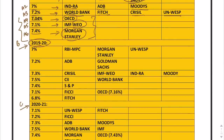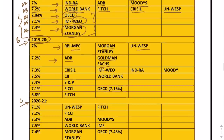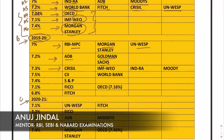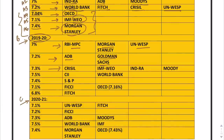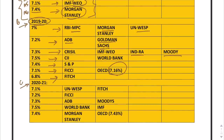For 2019-20, 7% is given by MPC, Morgan Stanley, and WESP. 7.2% is given by two organizations: ADB and Goldman Sachs. 7.3% is given by four organizations: Crisil, World Economic Outlook, IndRA, and Moody's. 7.5% is given by two organizations, 7.4% by one, 7.1% by two organizations, OECD giving figures up to two decimal places, and 6.8% given by one organization.